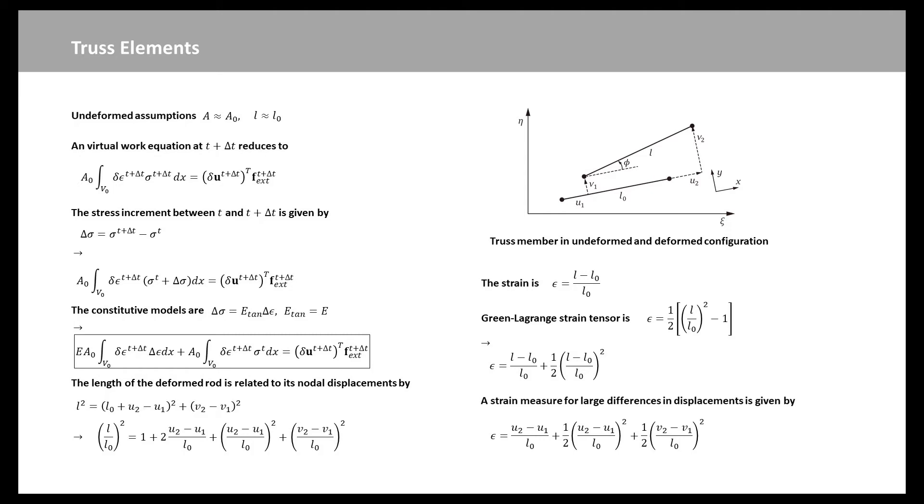While for small differences in the displacements, the strain can be defined in a straightforward fashion by seeing it equal to the elongation of the bar L minus L0 divided by the length L0. The definition epsilon equal to half of L over L0 squared minus 1 is more appropriate when large differences between the displacements are allowed. This strain measure is identical to the normal components of the so-called Green Lagrange strain tensor, so that the epsilon equation can be rewritten, which when L is approximately equal to L0 approaches the original equation.